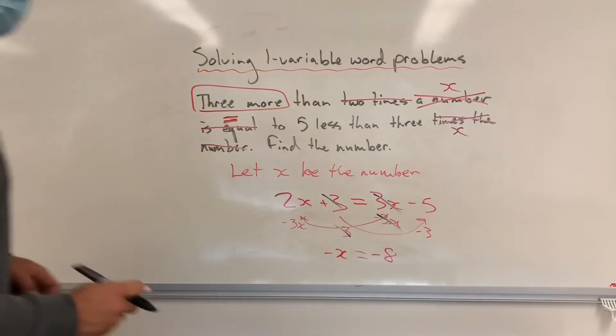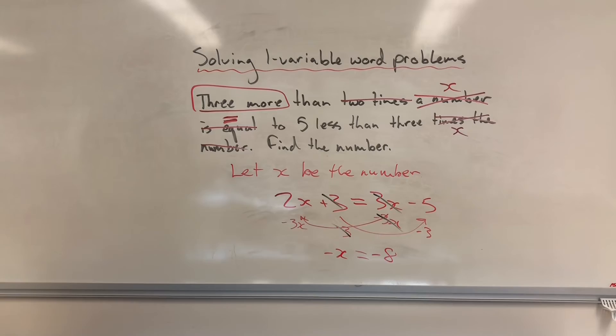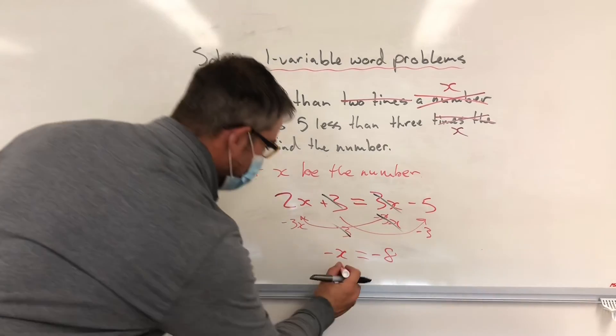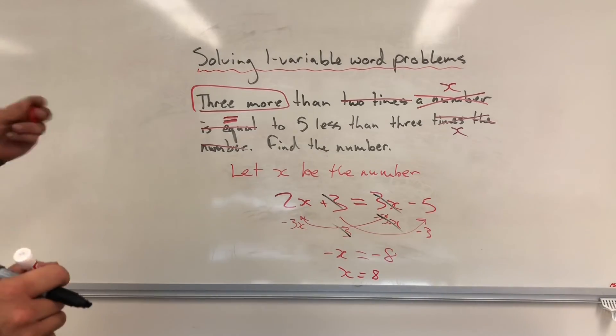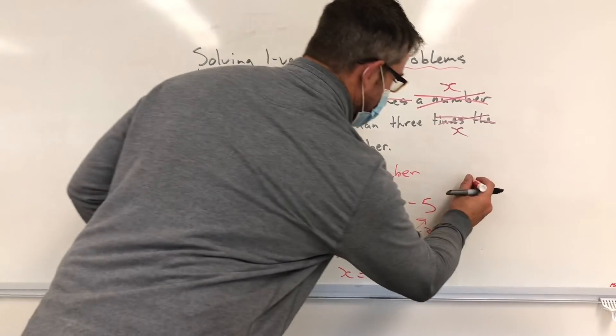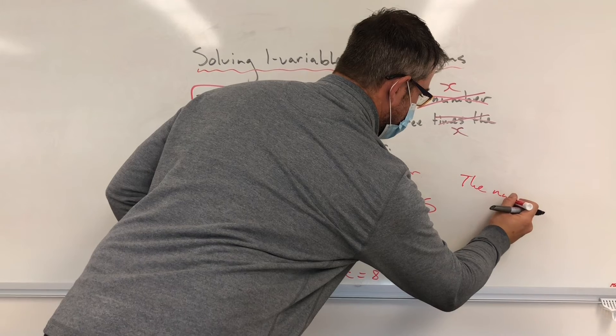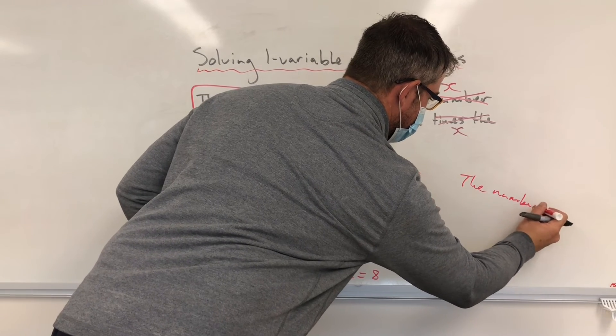And I would be left with negative X is equal to negative eight. Because negative five minus three is negative eight. Well, if negative X is equal to negative eight, then that must mean that X is equal to eight. And because it's a word problem, I'm going to answer in full sentence. The number is eight.